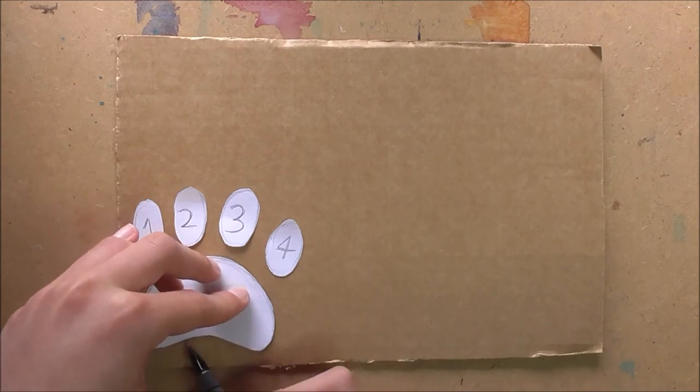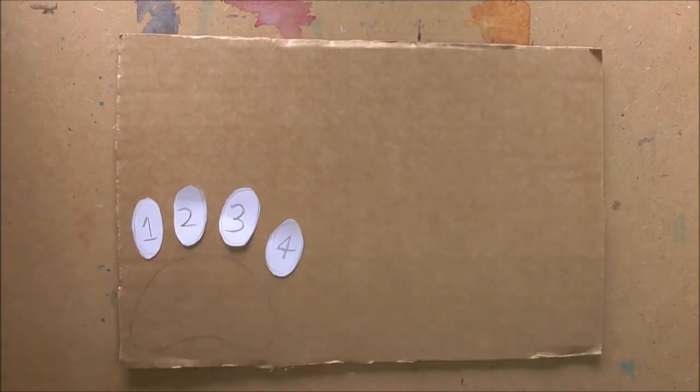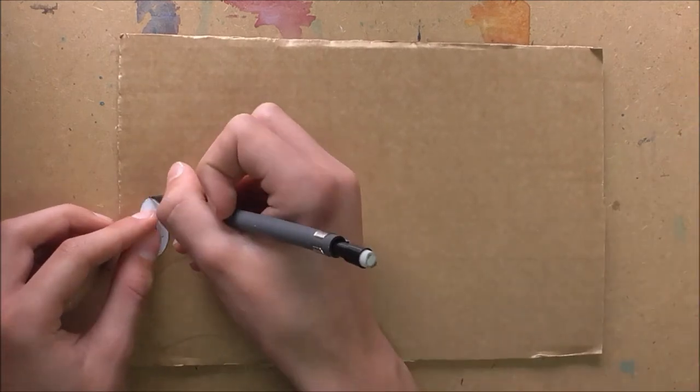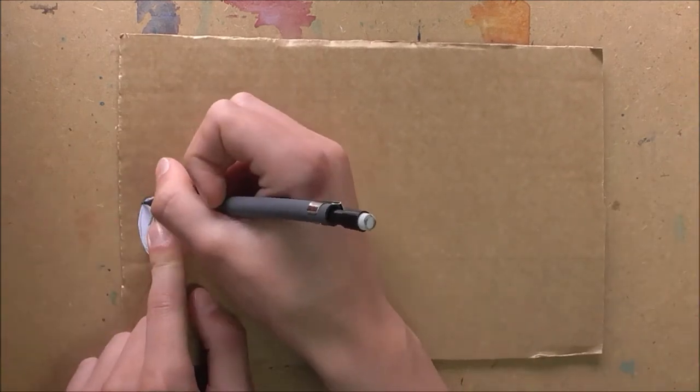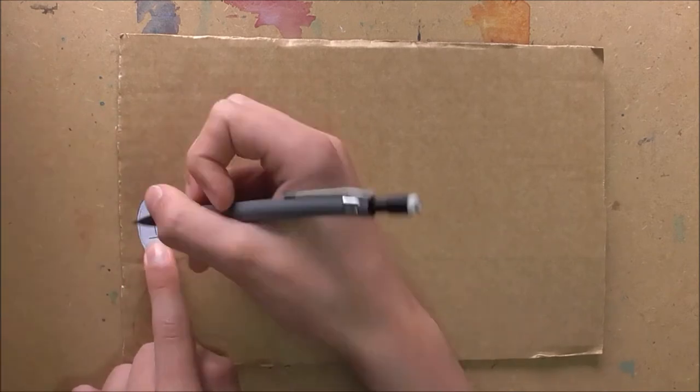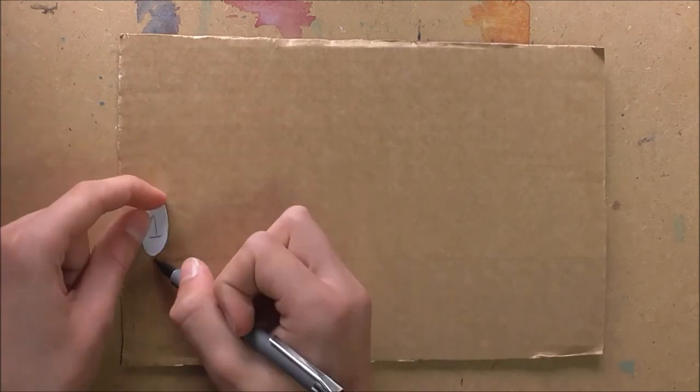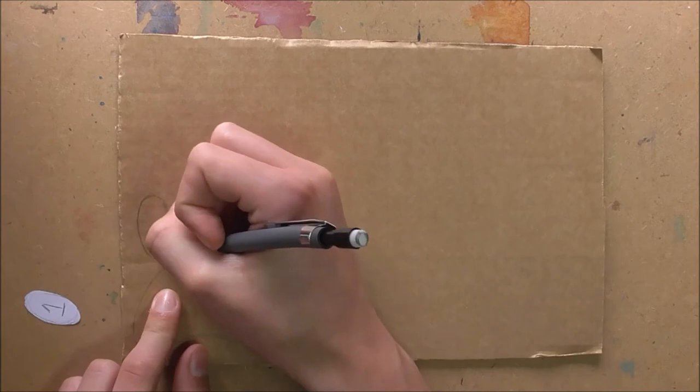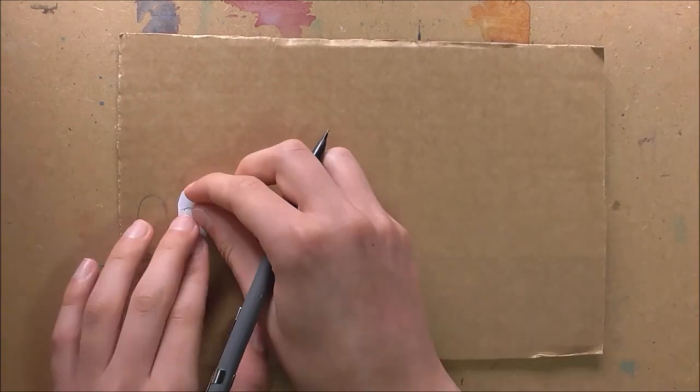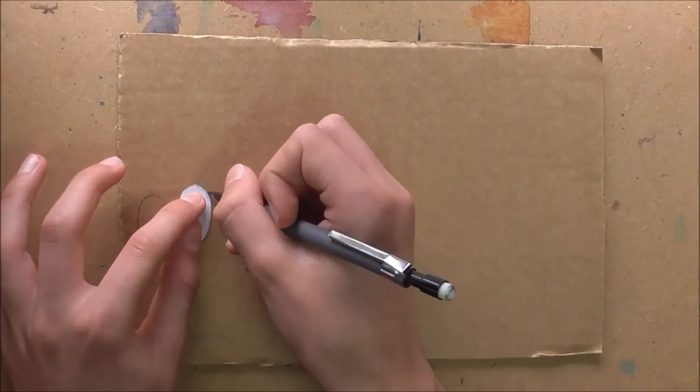And again I'm going to number them just because I find this helps for lining up later on on the printing plate if you like. I'll explain more about it later on. And you want to try and find some cardboard which is as flat as possible without really any texture.